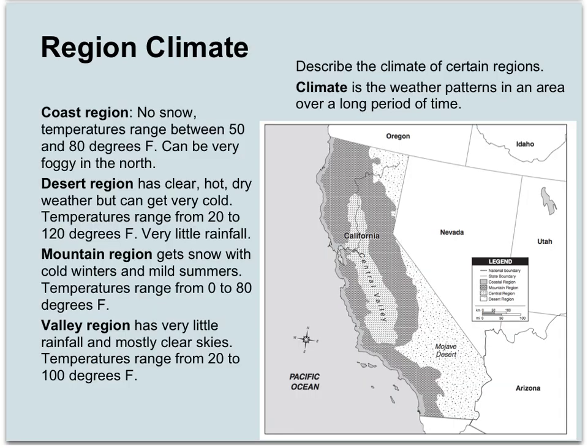What about the climate of each region? You need to know that as well — you have to be able to describe the climate of certain regions. Climate means what the weather patterns are in an area over a long period of time. Today's weather might be 80 degrees and sunny, but the climate is what it's like over a long period of time. By the time I'm done, you'll understand the different climates in California, keeping in mind we're giving you basic ideas since climate varies throughout the state.